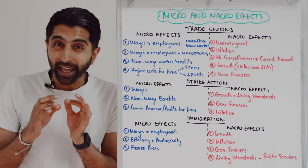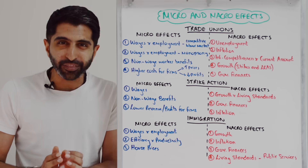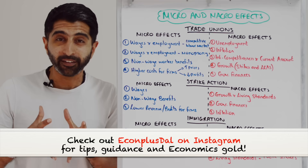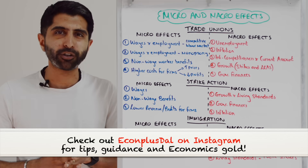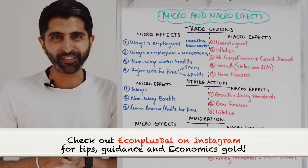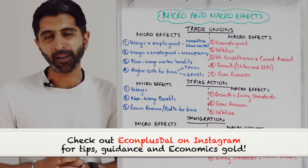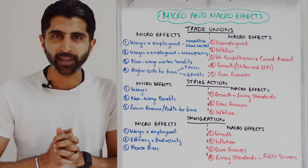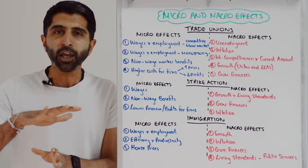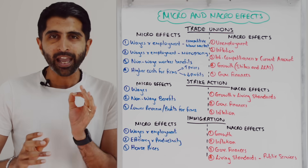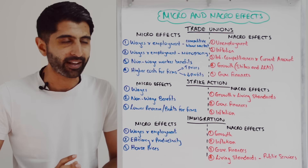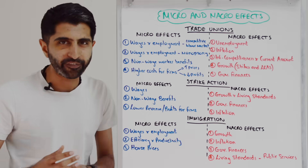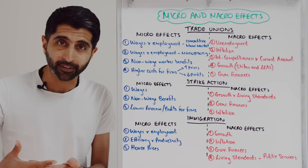Hi everybody. Labour market and labour market themes are commonly assessed in paper 3, so it's important that we understand what these themes are and what the micro and macro effects of these themes are, ready for if this comes up in paper 3. I've done this for a wide variety of topic areas that could feature in paper 3 — you can find all of those videos in my revision for paper 3 playlist. But let's dive in, starting with trade unions and the micro effects of trade unions being successful.